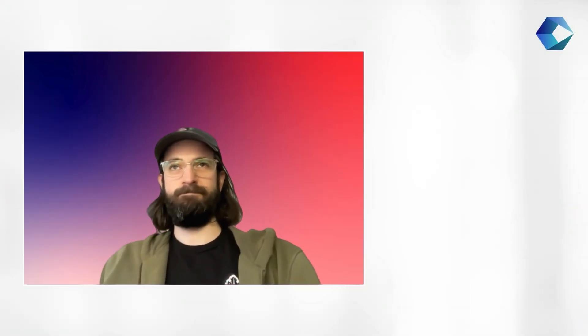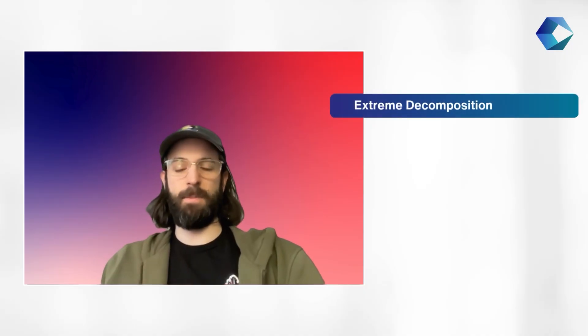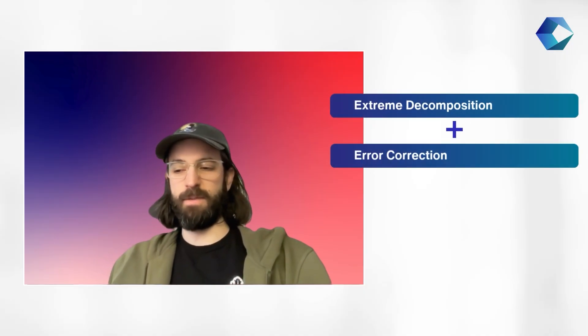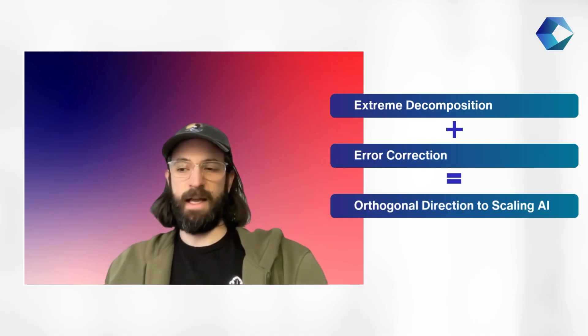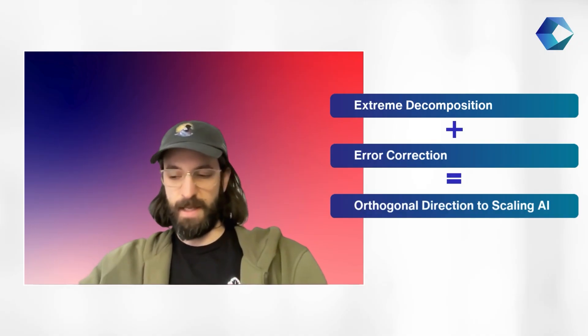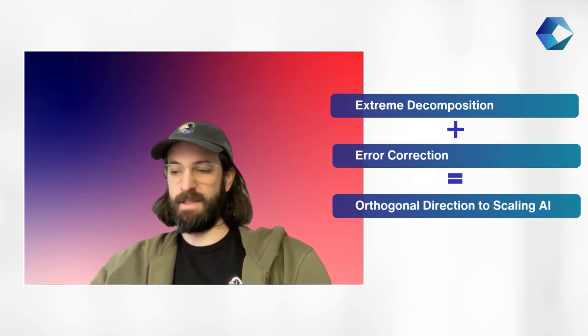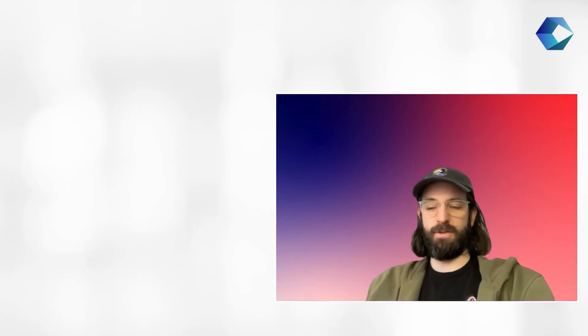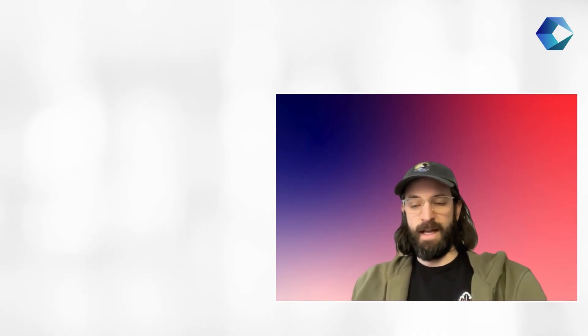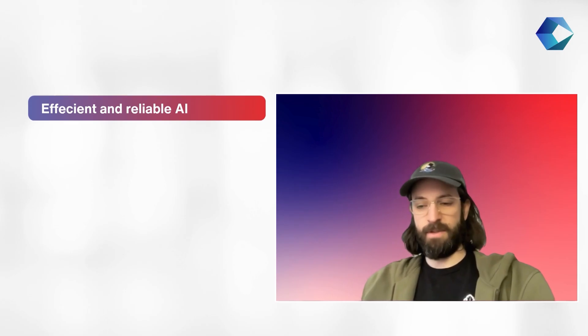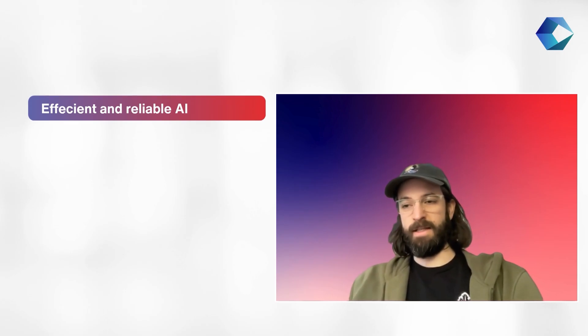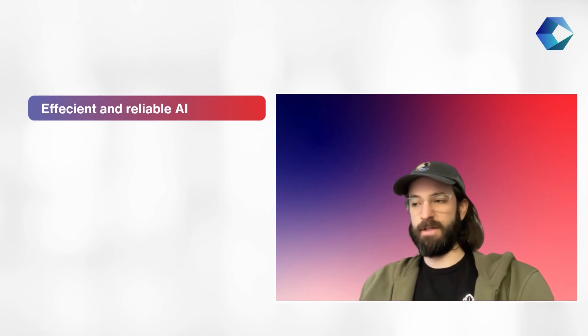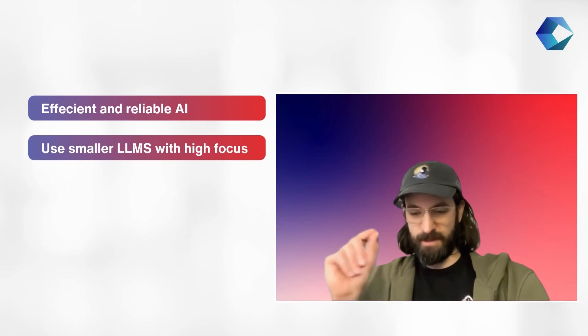The overall takeaway is that extreme decomposition coupled with error correction presents this orthogonal direction to scaling AI, not just building smarter and better underlying LLMs. By smashing problems into a million pieces then assigning multiple agents to collaborate to solve each piece through voting, we can get AI that is efficient and reliable. Notably, we don't even need to use state-of-the-art reasoning models—we can use smaller LLMs since they're now so focused.